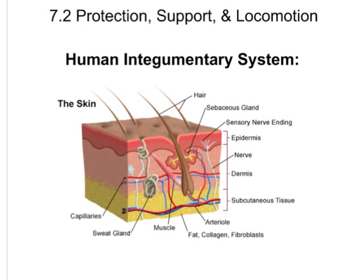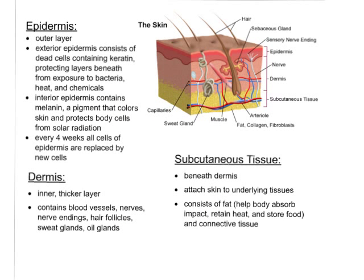The skin serves to protect. The very outermost layer of the skin is the epidermis — the exterior portion — and the very exterior portion of the epidermis itself consists of dead cells. The epidermis contains several sections. The interior epidermis contains melanin, which is a pigment that colors the skin, and its purpose is to protect body cells from solar radiation. About every four weeks, all of the cells of the epidermis are replaced by new cells.